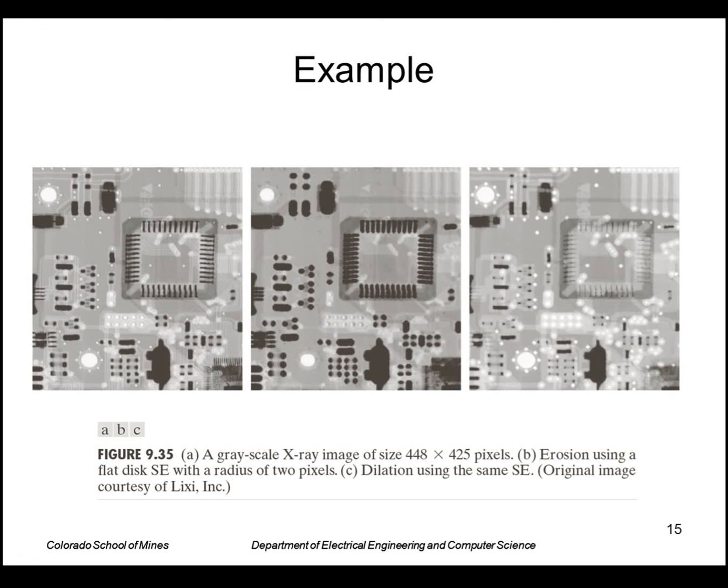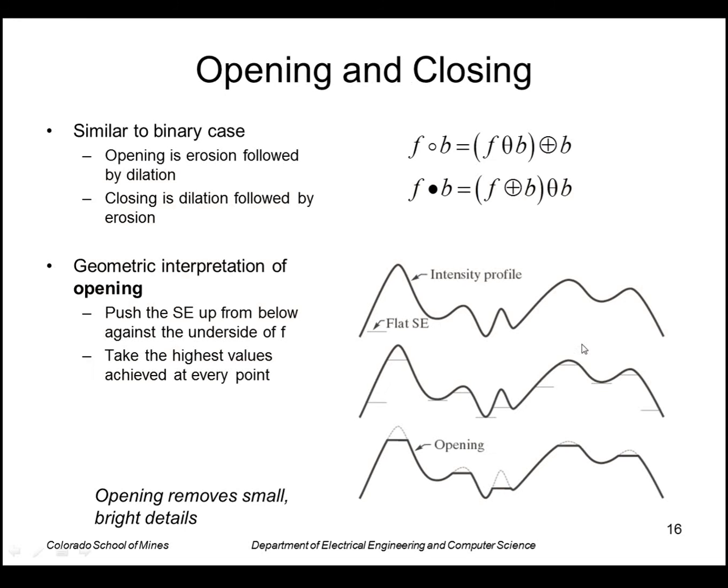So an example on a real image. Here is the input image. Here is the erosion. So it makes everything darker, lower values. Here is the dilation. So it makes things brighter. So we can put those together just like we do it for the binary images to form opening and closing operators.